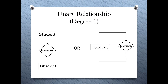Remember that it is not always necessary for a relationship set to have two or more entity sets. There could be a single entity set participating in a relationship set. Such a relationship set is called a unary relationship set, that is degree is equal to 1. For example, the monitor of the class manages other students, but he or she also belongs to the student entity set. Two ways to represent a unary relationship set in an ER diagram are shown on the screen.